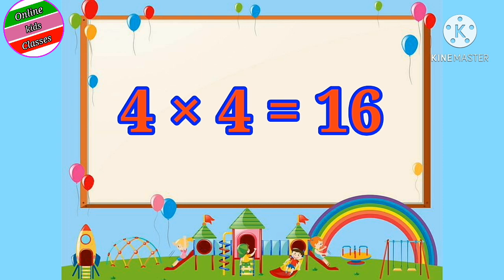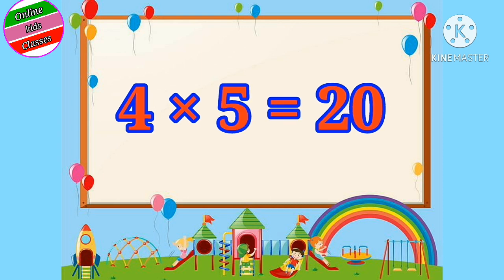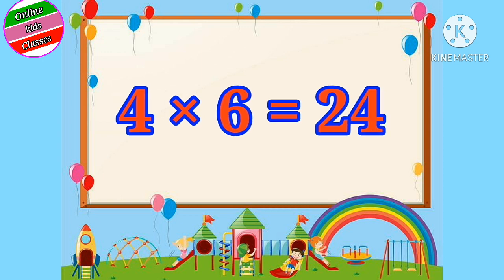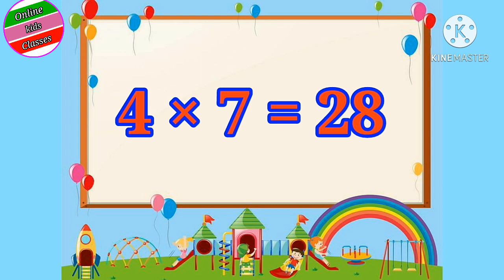Four fours are sixteen. Four fives are twenty. Four sixes are twenty-four. Four sevens are twenty-eight.